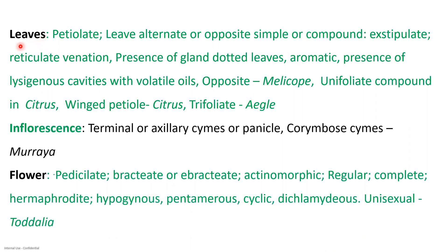Coming to leaf characters: leaves are petiolate, alternate or opposite, simple or compound. Stipules are absent, hence exstipulate. Venation is reticulate. There is presence of gland-dotted leaves, which make the leaf aromatic — if you crush a lemon leaf and smell it, you get a beautiful aroma. There is also presence of lysogenous cavity with volatile oils.